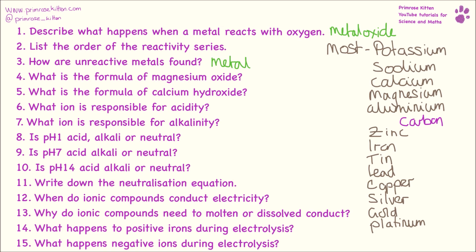What is the formula of magnesium oxide? You need to know all of the ions and how to work out an ionic formula or formula of a salt. The magnesium ion is Mg²⁺ and the oxygen ion is O²⁻. We are aiming for zero overall — two positives and two negatives — so the formula is going to be MgO.